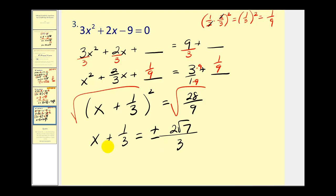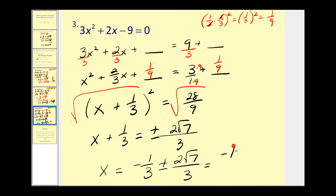In the last step we subtract one-third from both sides, giving x equals negative one-third plus or minus 2 square root 7, all over 3. Or we can write this as negative 1 plus or minus 2 square root 7, all over 3. That's it for completing the square — this is a good technique for solving quadratic equations that are not factorable. We'll also use this technique to derive the quadratic formula in another video. Thank you for watching.